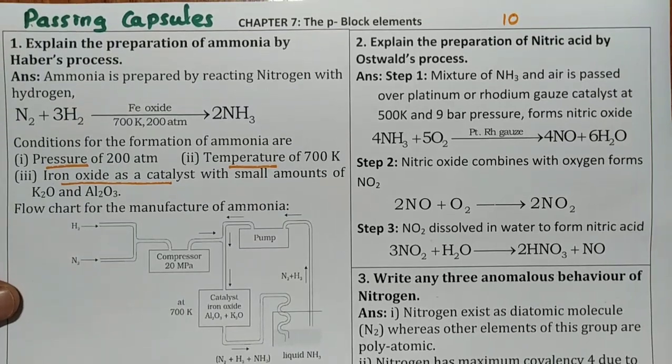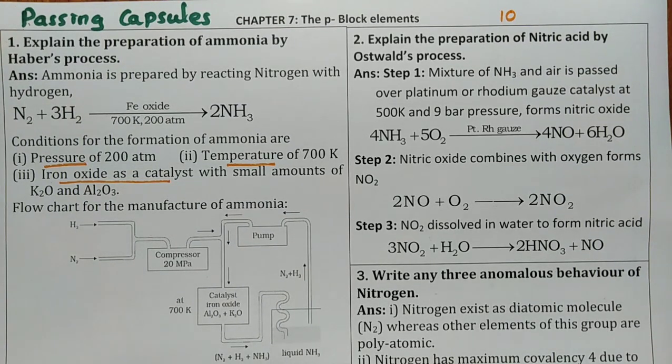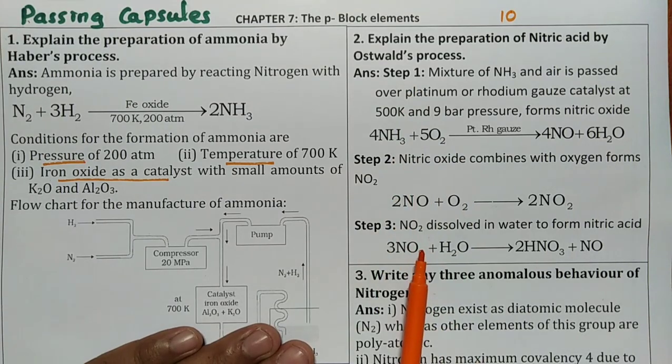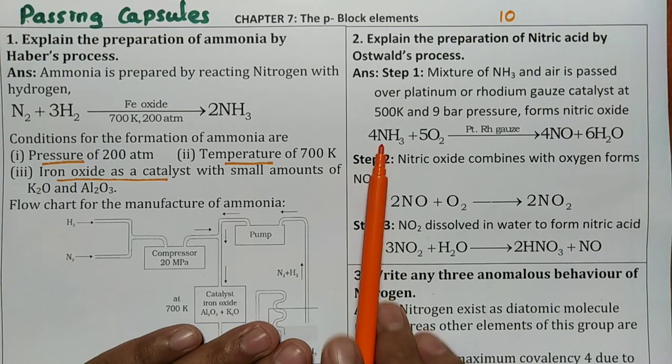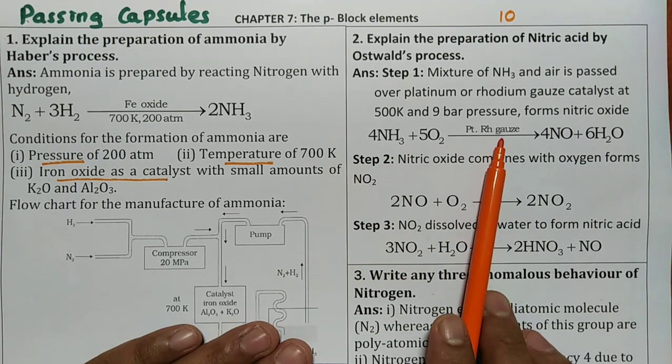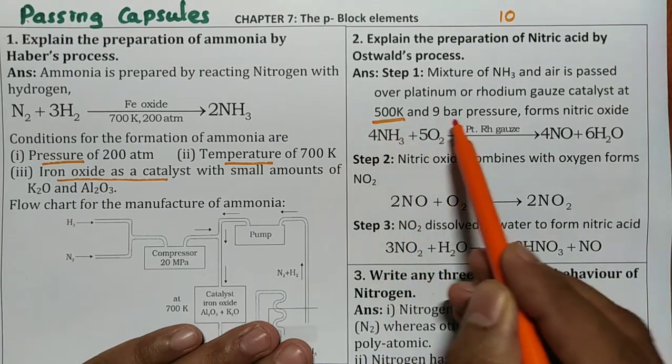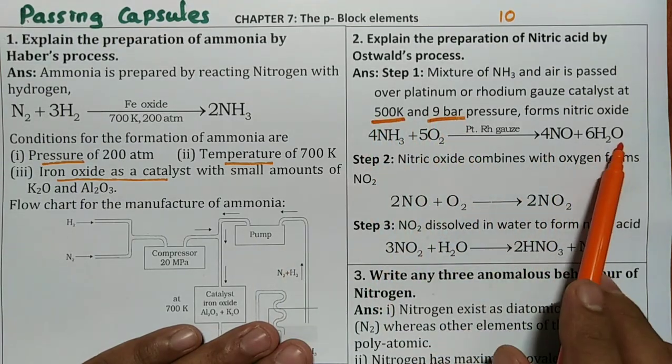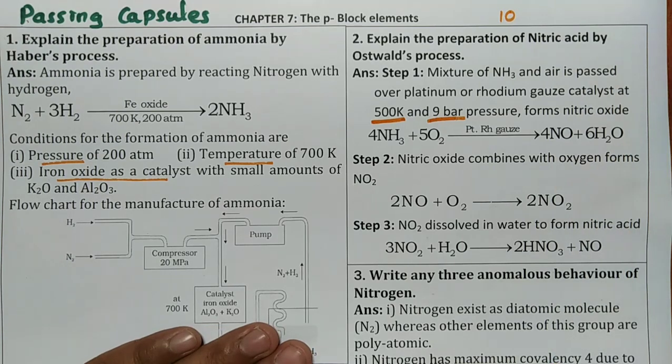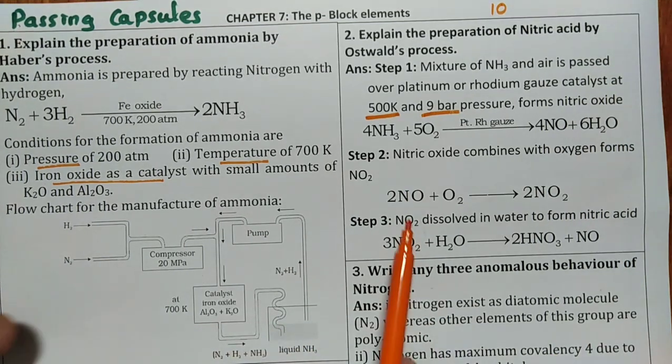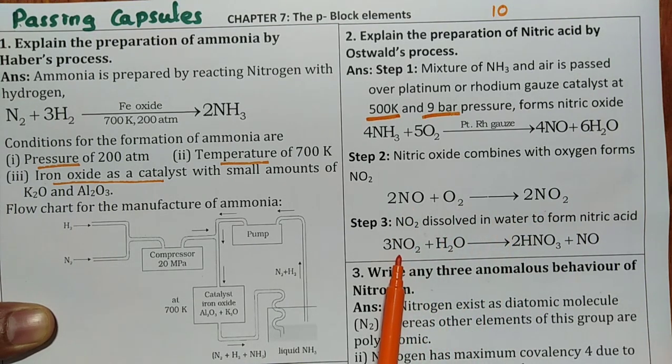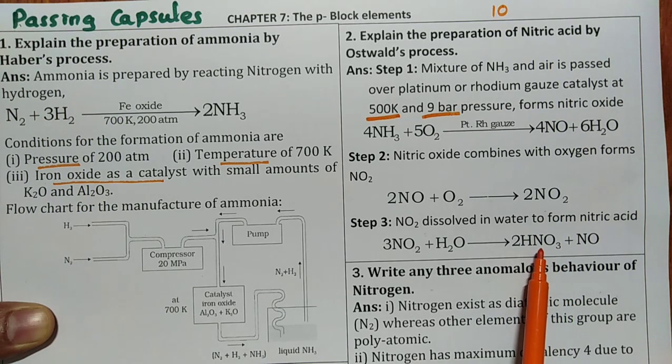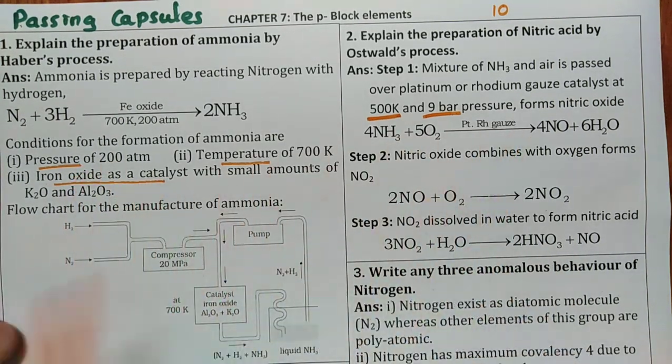Then second one explain the preparation of nitric acid by Ostwald's process. This is also three marks question. Step one one mark, Step two one mark, Step three one mark. Very simple way you can practice this. First step ammonia is oxidized by air over platinum or rhodium catalyst with temperature and pressure. Don't forget to write 4NH3 plus 5O2. Balance chemical equation is needed. Nitric oxide in second step. Nitric oxide oxygen react. Third step nitrogen dioxide water react. So HNO3 form. All the cases temperature pressure catalyst compulsory you have to write.